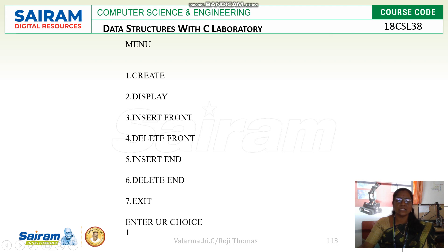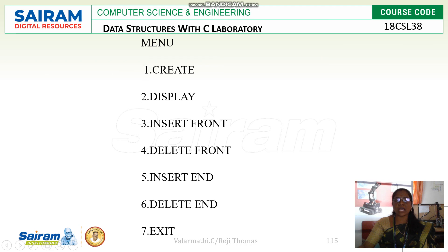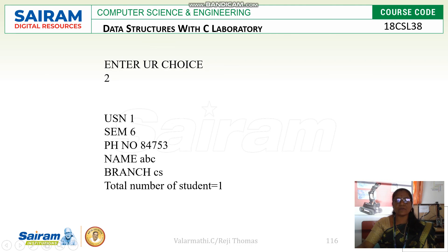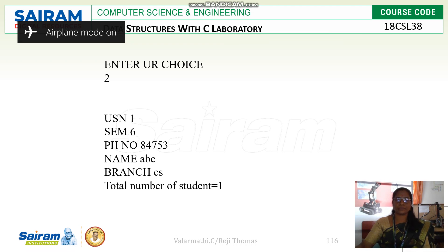Now we are going to create a new SLL, so our option is one. For one node, it asks for all member variables: USN, name, branch, semester, and phone number. After providing everything, the node is created. Then choosing option two to display, the details of the one created node are shown along with the total number of students. I hope you understand the basic outputs and operations of the SLL. See you in the next video. Thank you.